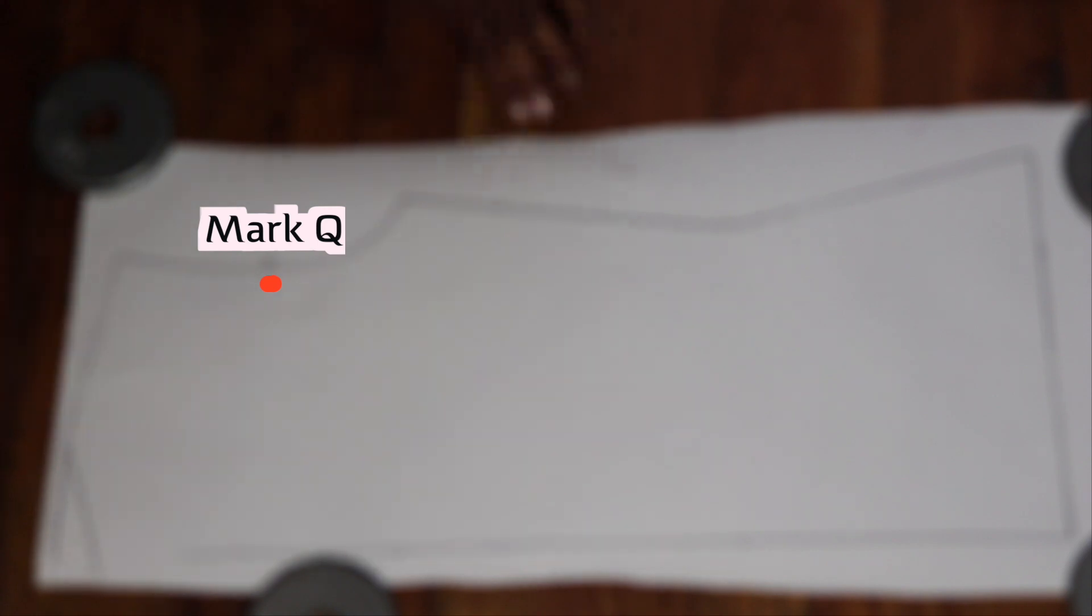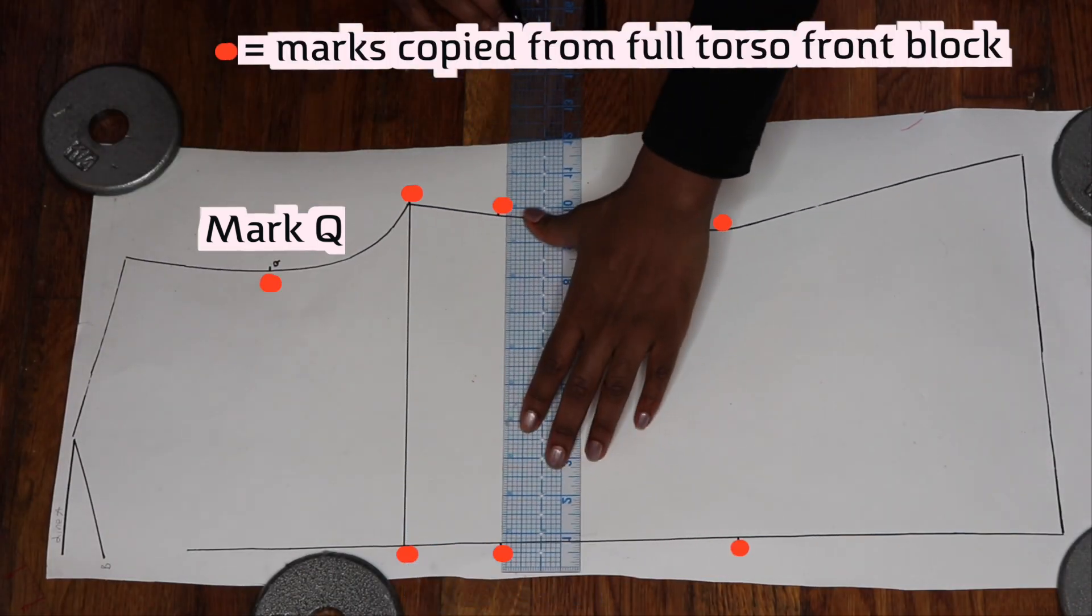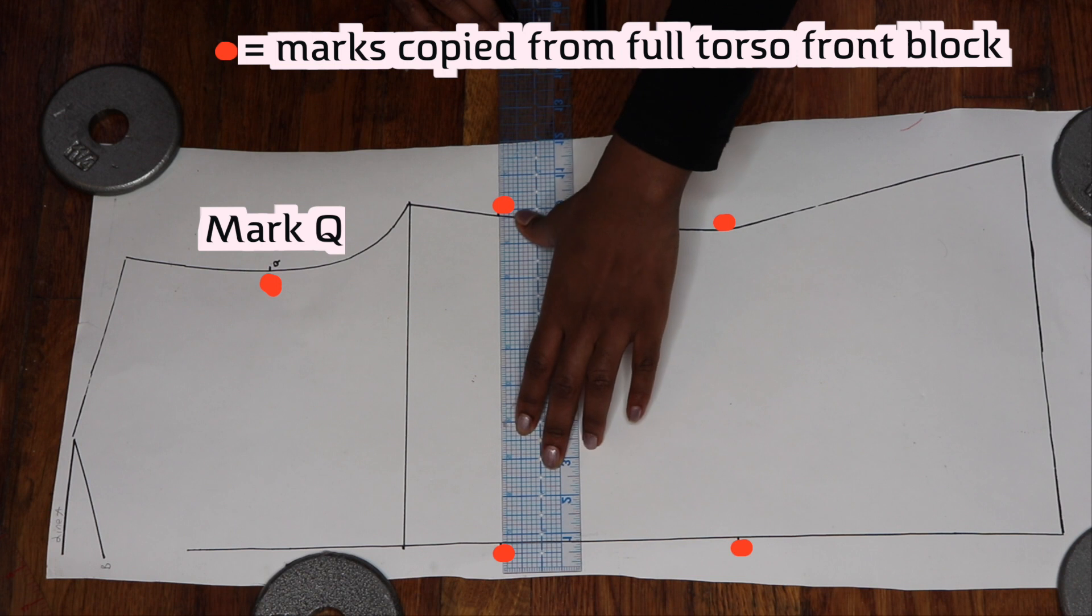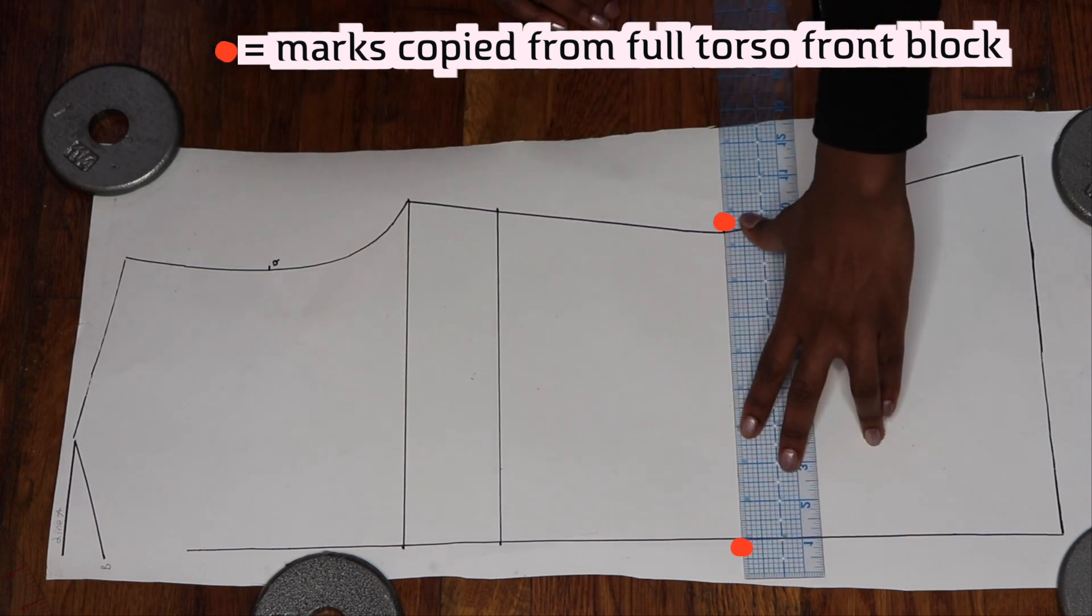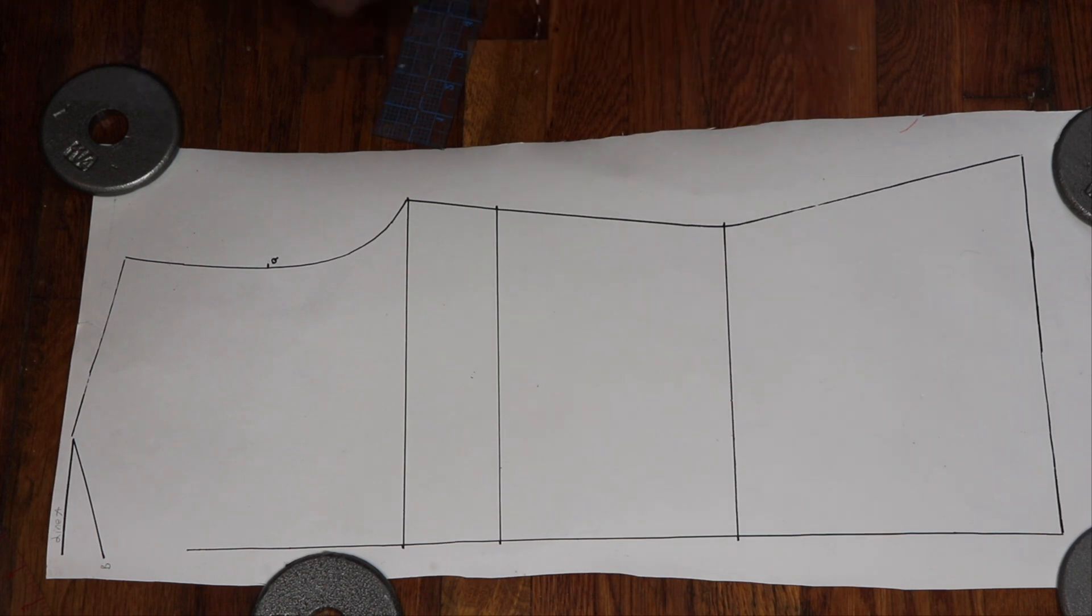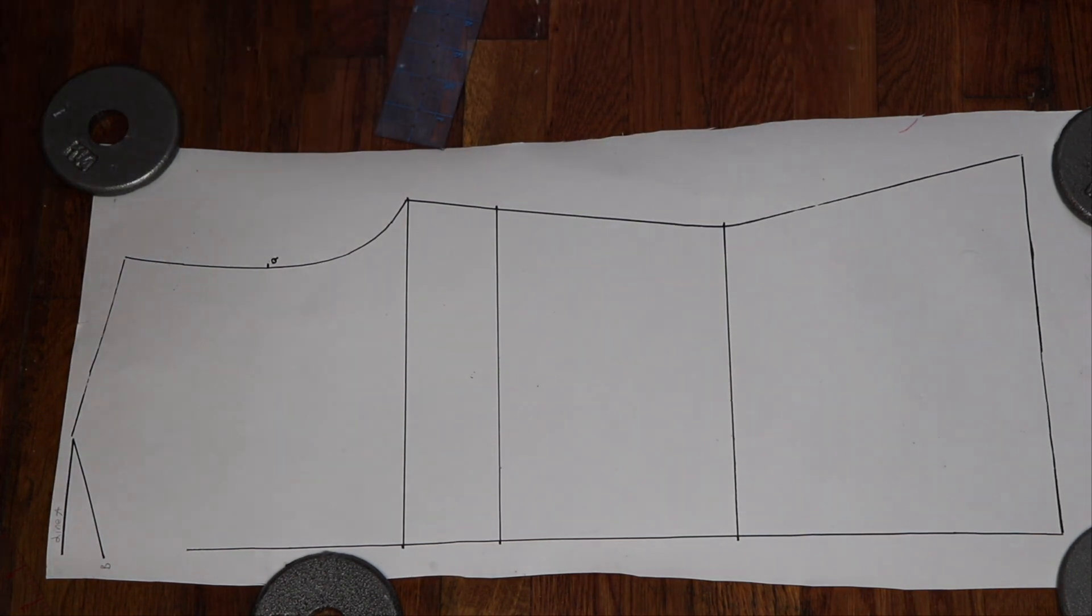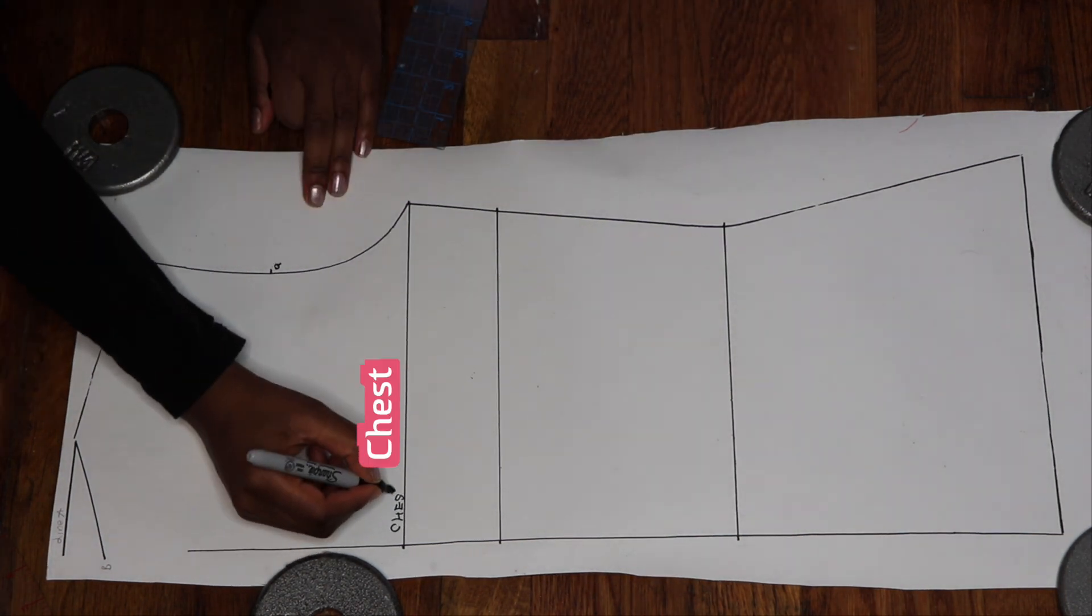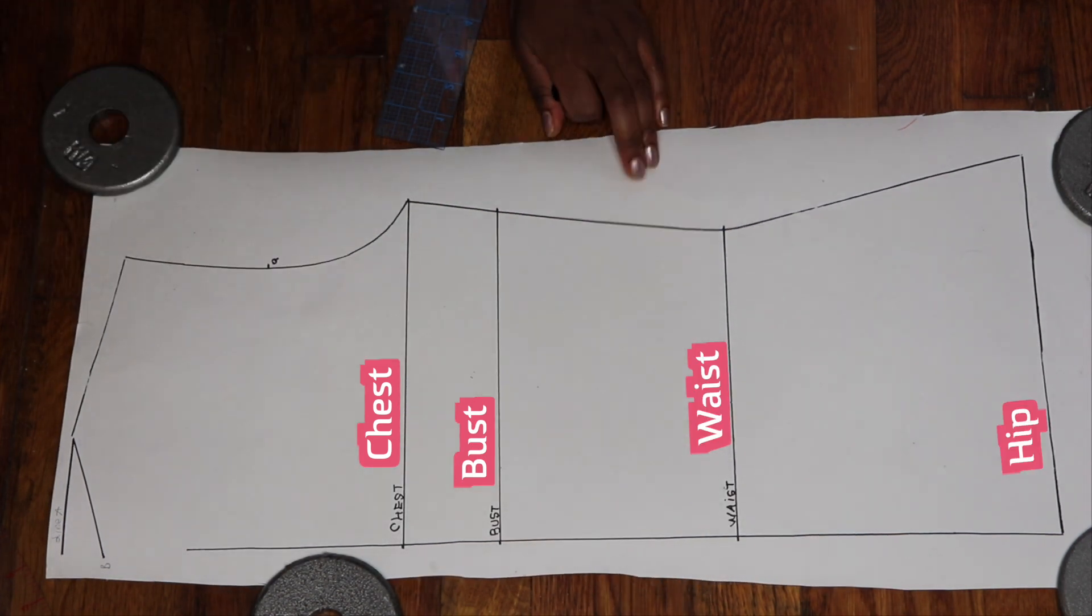My camera went blurry but I just titled that notch with the letter Q and then I'm using my ruler to draw a straight line. I'm using the marks that I copied from the full torso front block as a guide to make the straight lines and then I'm retitling them: the chest, the bust, the waist and the hip line.